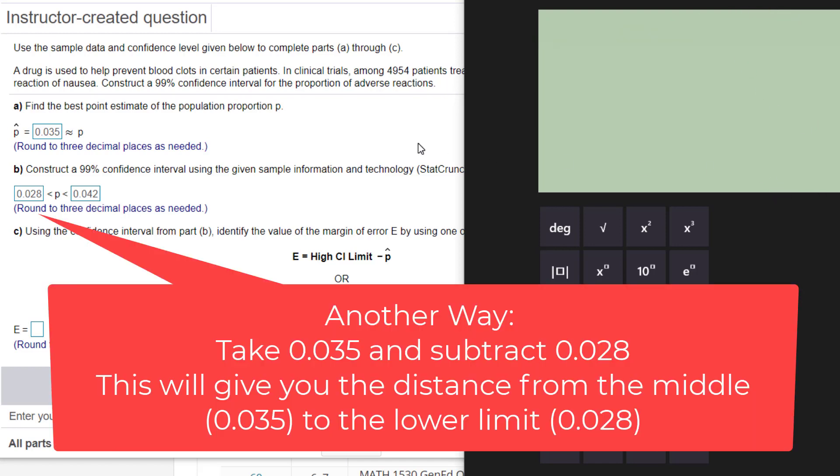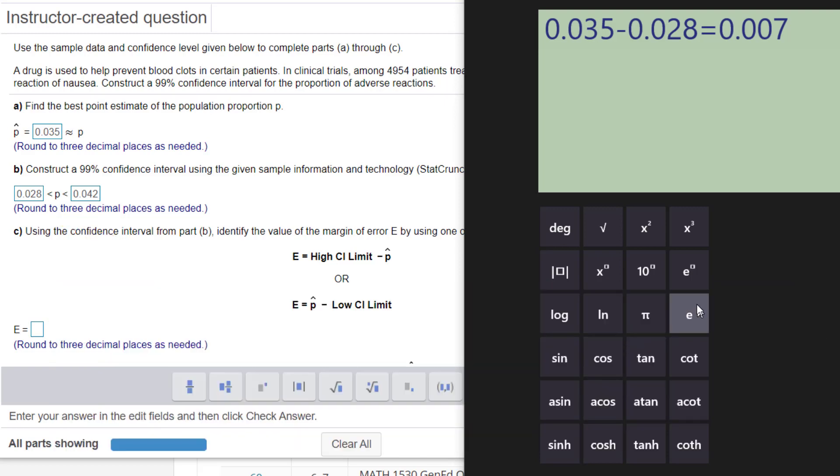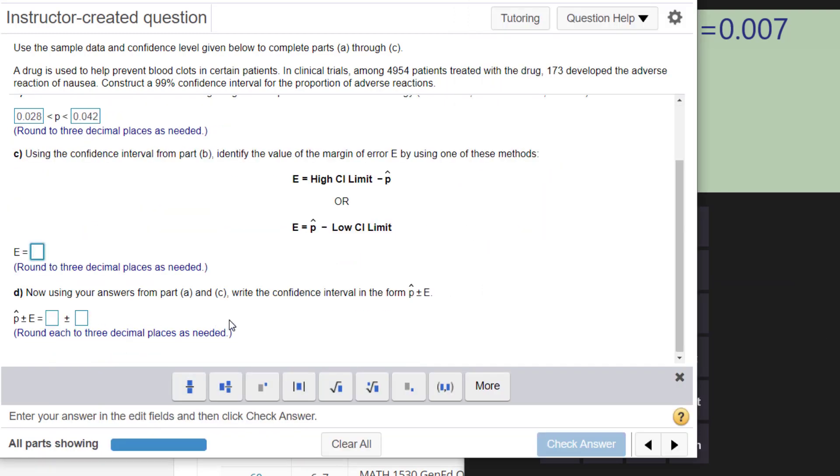Now another way is, if you go from the middle to the bottom to the lower number, you could also do a subtraction that way where you take the middle number, the P hat, subtract the lower side. If you remember, the margin of error is basically how far it takes to get from the middle to one of the edges. So it looks like our margin of error is 0.007.